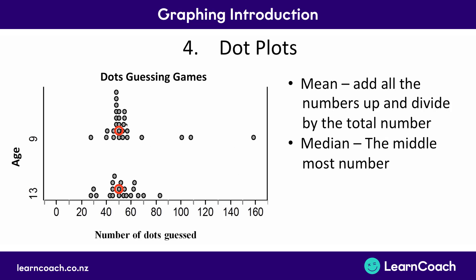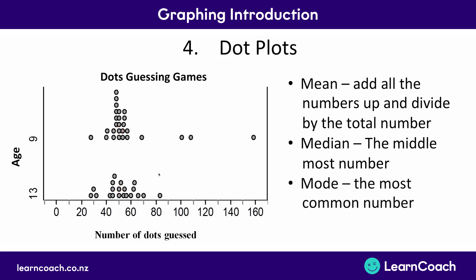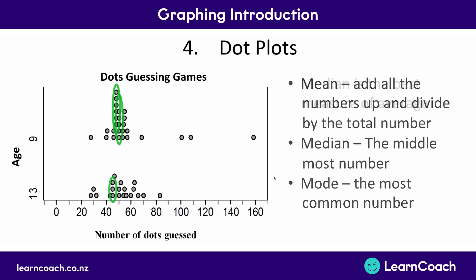The last way to measure average is called the mode — the number that is guessed most often. For 9-year-olds we have two modes, where the same number of people guessed 45 as guessed 43. For 13-year-olds, three people guessed 43, making that the mode. But remember, your median is the best measure of average. If somebody says the mode is the best, you have to correct them in your exam, because you do get questions on that.